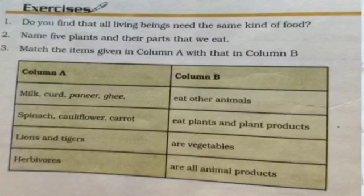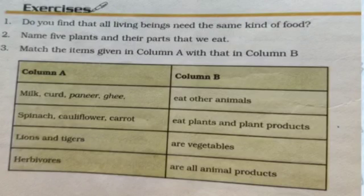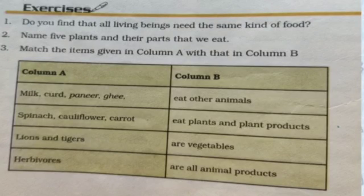Question 2: Name five plants and their parts that we eat. First: radish plant — we eat the root. Second: spinach — we eat the leaf. Third: rice — the edible part is the seed. Fourth: brinjal — we eat the fruit. Fifth: potato — we eat the stem.